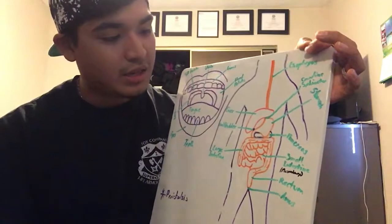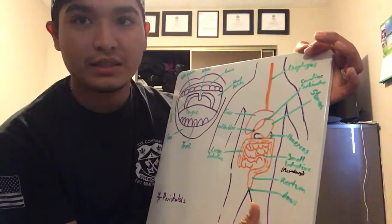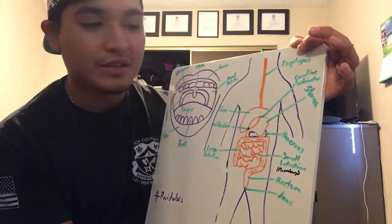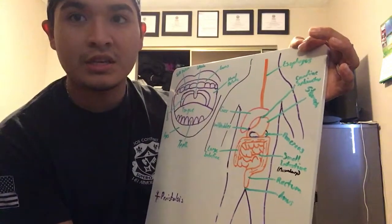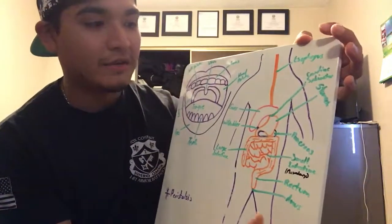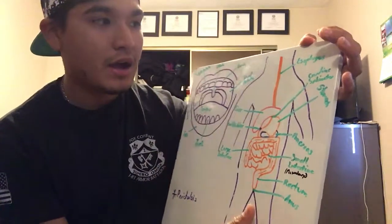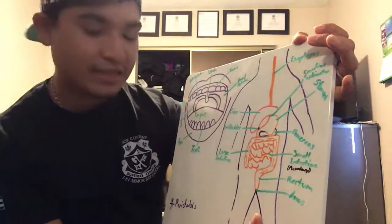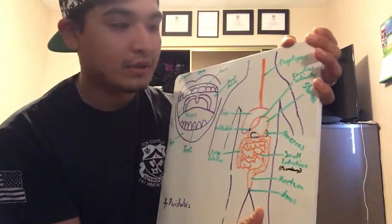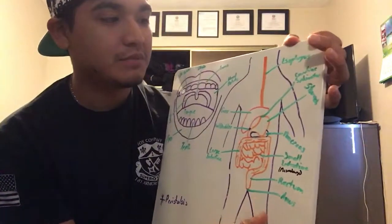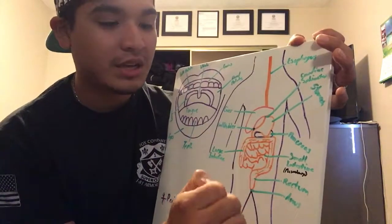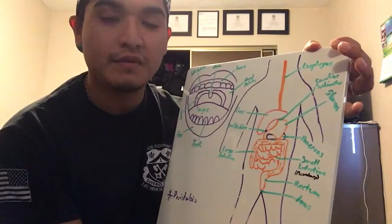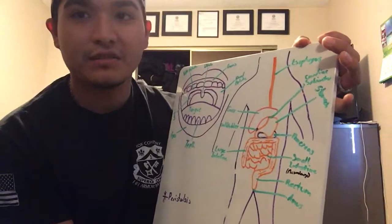The pancreas secretes insulin to break down sugar, and its juices break down fats. Peristalsis pushes the food down the tubes, and what controls that is the vagus nerve.